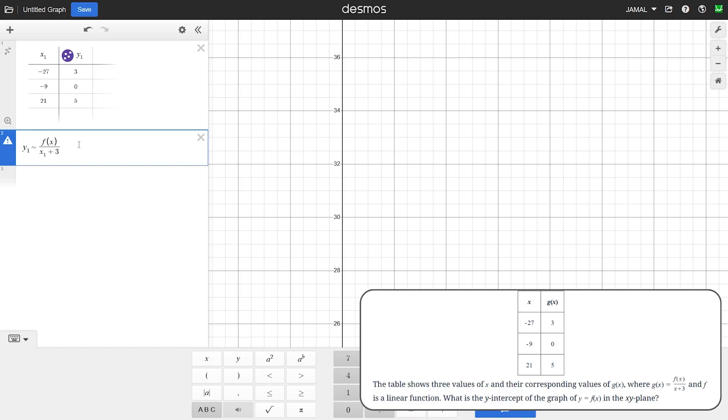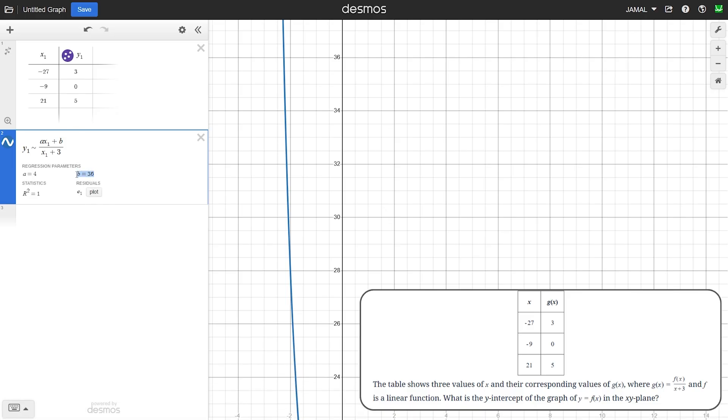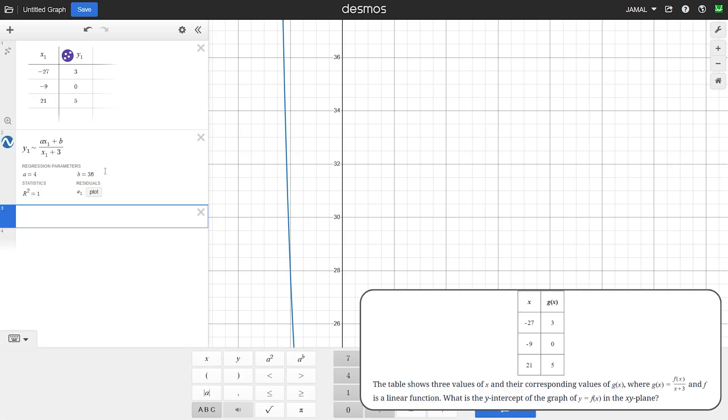Let's use the tilde sign for regression and rewrite it as it is in our question. We're given that f(x) is a linear function. As I explained in the previous question, we know that linear function's overall structure looks like this. Let's rewrite the whole function because we're asked to find the y-intercept and we need to find this b value. It's really important to use x1 here, not just x, because if I would use x it will give me an error. I use x1 and I see here that my b is equal to 36, which is the y-intercept of the graph of y equals f(x).